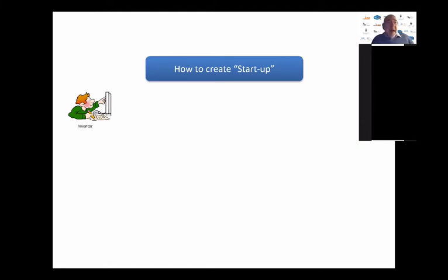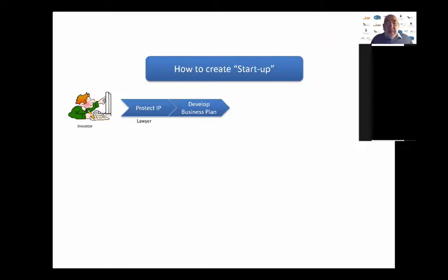The inventor finds a problem and develops some idea that can solve that problem. He or she would then, in the classical world, want to protect that intellectual property — usually involving working with an intellectual property lawyer. One would protect the IP, and then what the classic business school model tells us is we then develop a business plan.